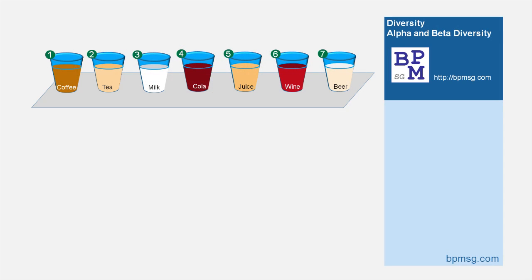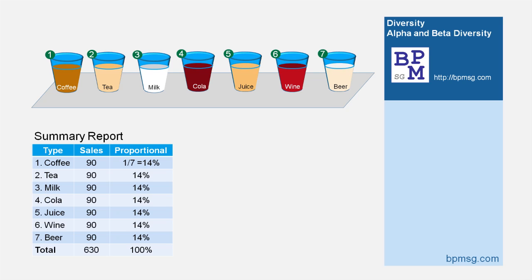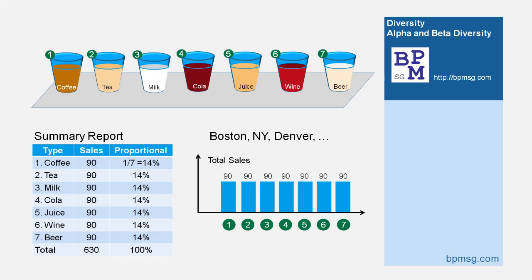Let us go back to our example of selling different drinks in a restaurant. With seven types of drinks equally selling, the Shannon Entropy is logarithm of 7, or 1.95. Now, let us assume we manage restaurants at seven different locations and we get a monthly summary report of total sales of the different types of drinks.